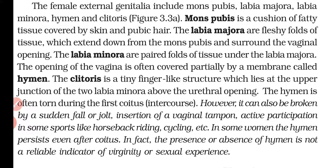The hymen is often torn during the first coitus or intercourse, but it can also be broken by a sudden fall or jerk, insertion of a vaginal tampon, or active participation in sports like horseback riding or cycling. However, in some women the hymen persists even after coitus. The presence or absence of a hymen is not a reliable indicator of virginity or sexual experience.